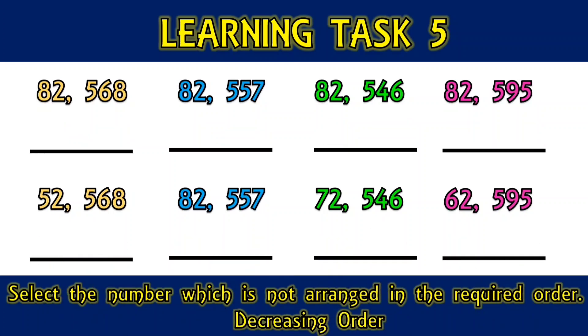Select the number which is not arranged in the required order. Decreasing order: 82,568, 82,557, 82,546, 82,595.